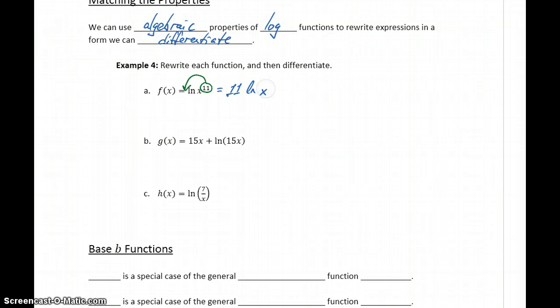So we can rewrite this as 11 times the natural log of x. So once we use that rewrite, then we can find f prime of x as 11 times the derivative of natural log of x, which is 1 over x. So we get 11 over x.